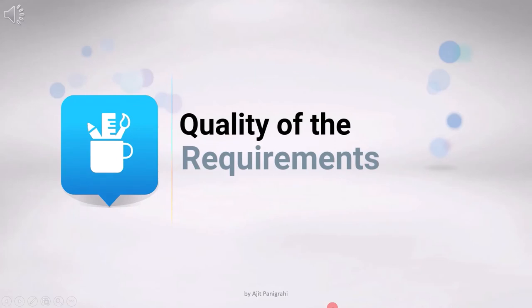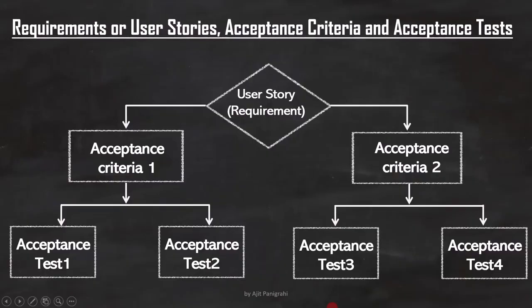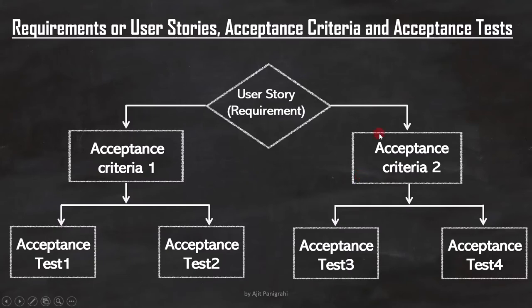In this lecture we will cover the importance of the quality of requirements. The learning objective — marked K2 — is to explain how the quality of requirements or user stories and acceptance criteria affects acceptance testing. The development of test cases is completely dependent on the requirement and acceptance criteria. Therefore, a wrong requirement or user story will lead to wrong acceptance criteria, which will result in wrong test cases.